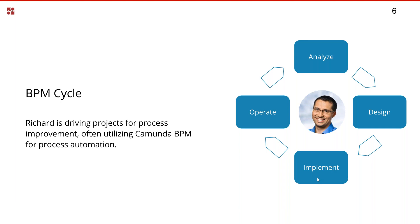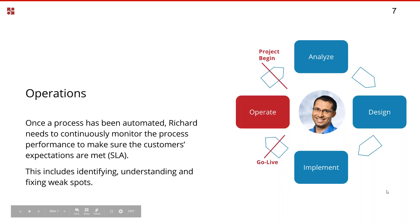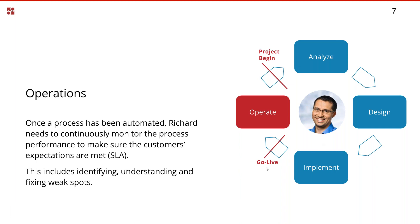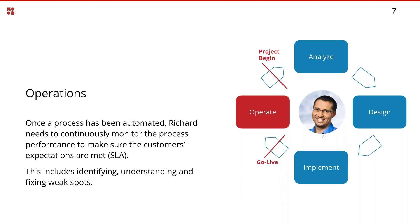Richard acts as a product owner in the scrum sense — providing requirements, looking at the backlog, and testing results created by developers. Then we have operations — the part we're specifically interested in with Optimize. A typical IT project has stages that eventually lead to a solution put into production. Once the project is completed, Richard's responsibility has not vanished. He's still responsible for the business performance of the process.